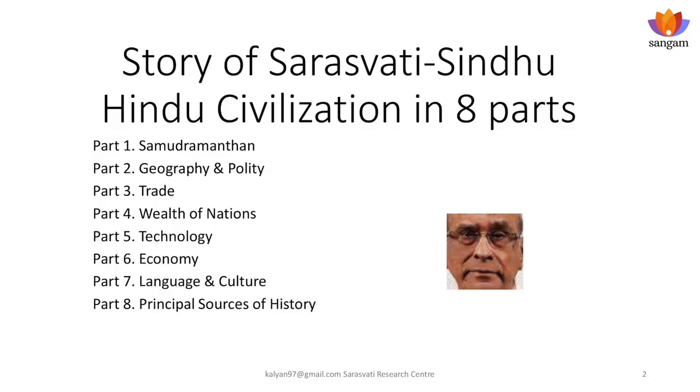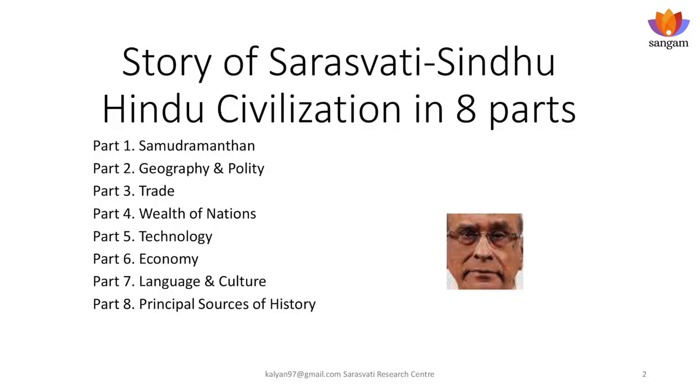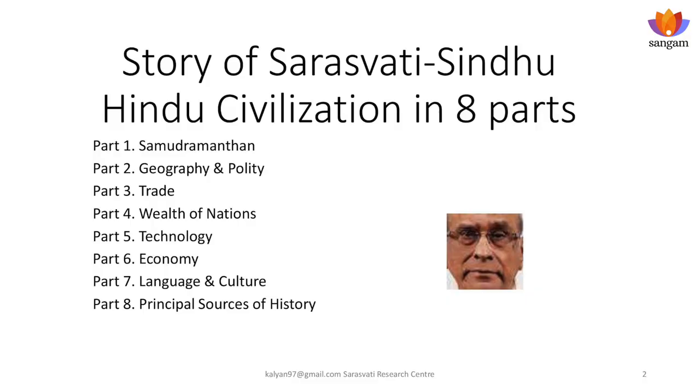In the story of Saraswati's Hindu civilization, which we will be covering in a number of episodes, we have so far covered three topics. One is Samudra Manthan, which is a narrative of the resources of the rivers, oceans, mountains, and environment — geography and quality referring to the terrain and resources offered by the plains and foothills of the Himalayas, which facilitates agriculture in alluvial soil. We also want to look at trade as a very major activity of the people of the civilization across a very extensive area.